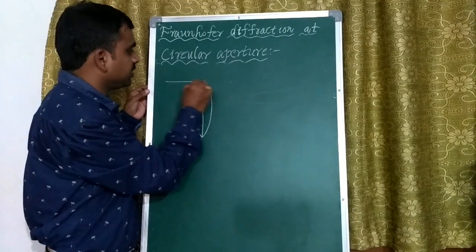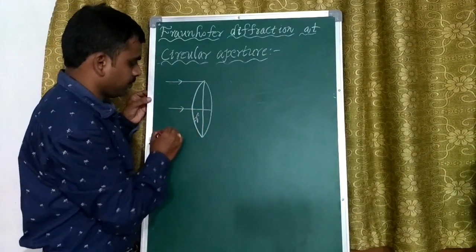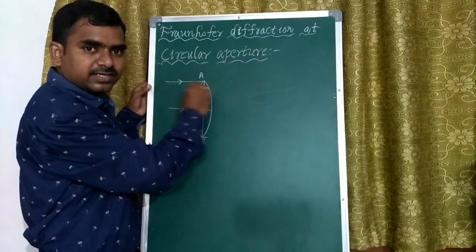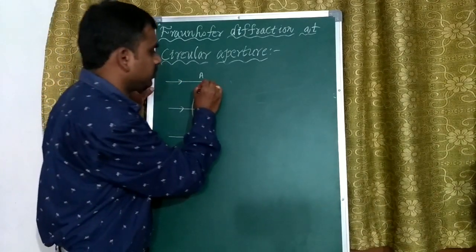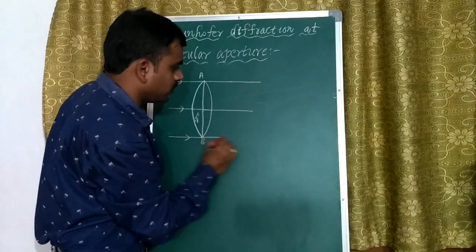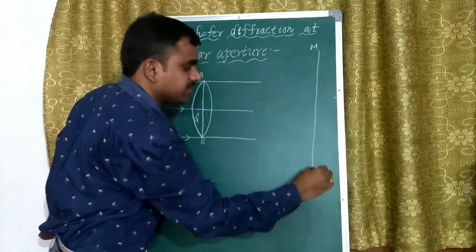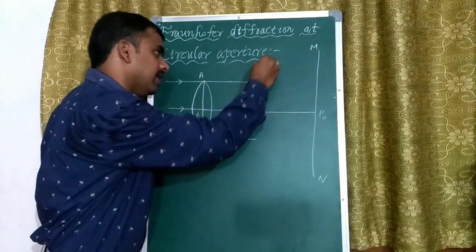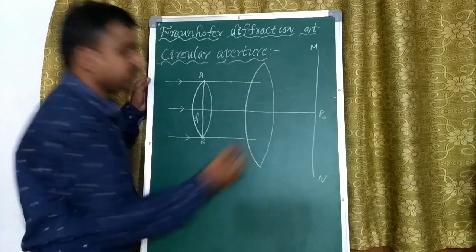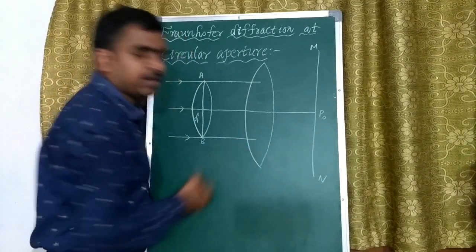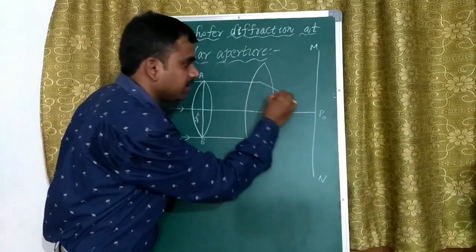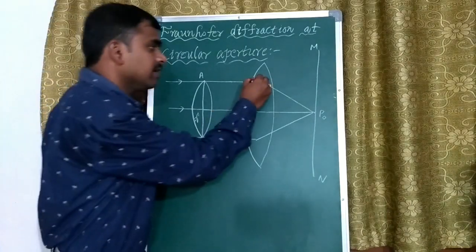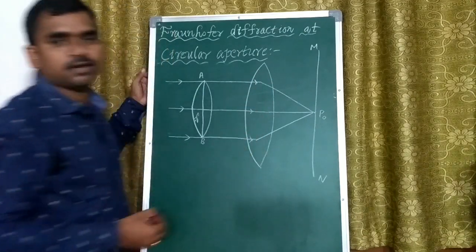We take a wavefront coming toward the aperture. Whenever the rays reach the aperture, secondary waves are produced and travel forward. We want to focus them on a screen MN at position P₀ using a convex lens placed within the focal length. The secondary waves reach the screen at P₀, where we get maximum intensity — this is called the central maxima or principal maxima.